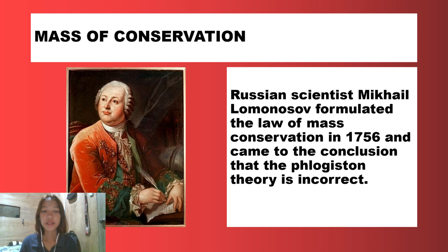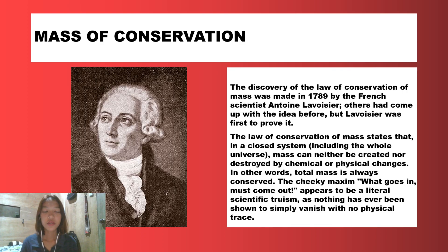Russian scientist Mikhail Lomonosov formulated the law of mass conservation in 1756 and came to the conclusion that the Phlogiston theory is incorrect. The discovery of the law of conservation of mass was made in 1789 by the French scientist Antoine Lavoisier. Others had come up with the idea before, but Lavoisier was first to prove it.